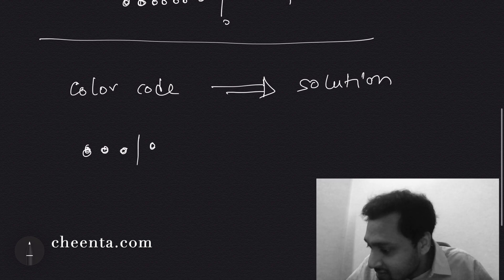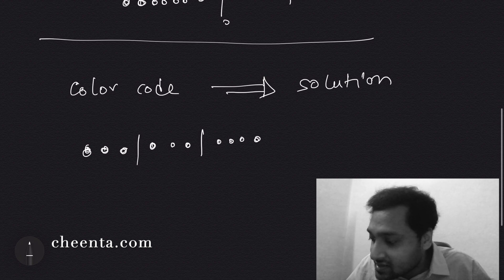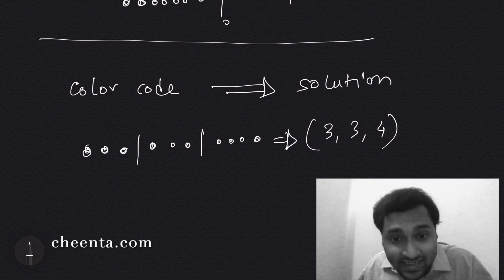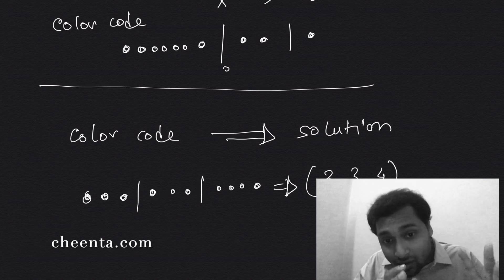So if I give you another color code, let's say this, you can immediately tell that the solution is 3, 3, 4. So what we are trying to say here is there is a bijection between the collection of color codes and the collection of solutions.